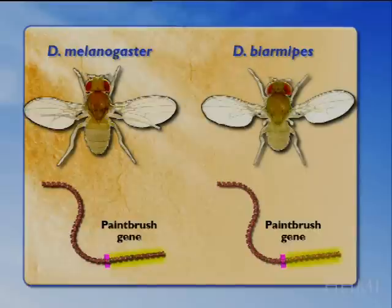There's a gene, we're just going to call it the paintbrush gene, that's coding sequence is shown here in yellow — the same sort of schematic arrangement that we showed you for the stickleback.